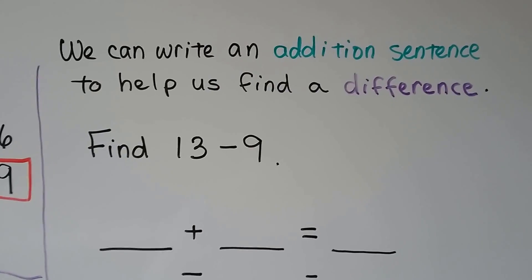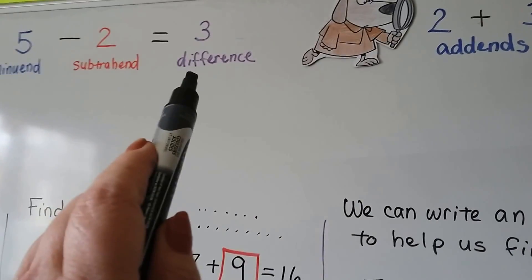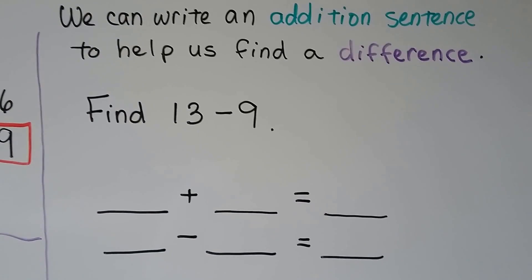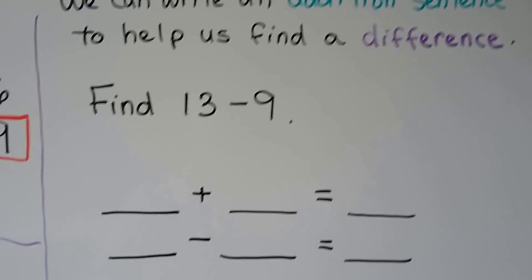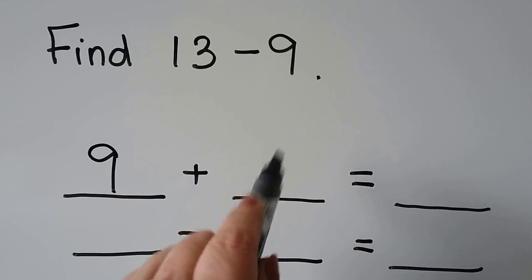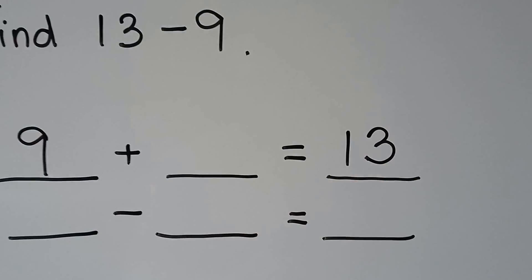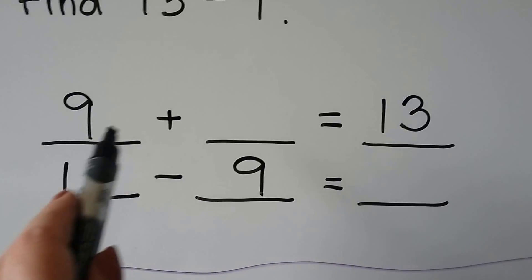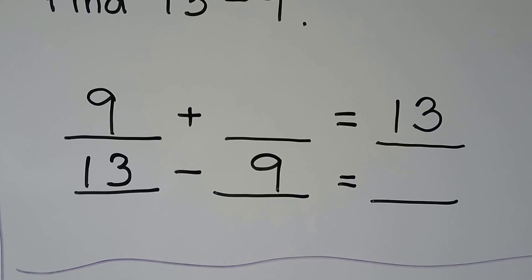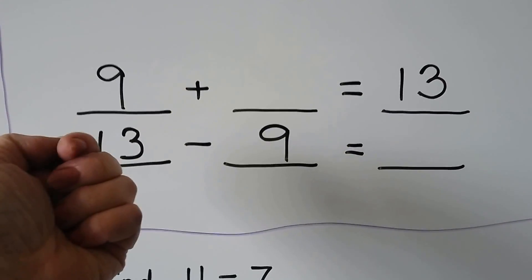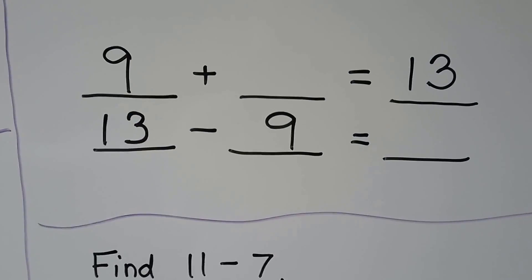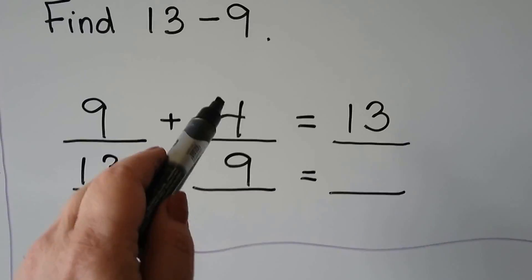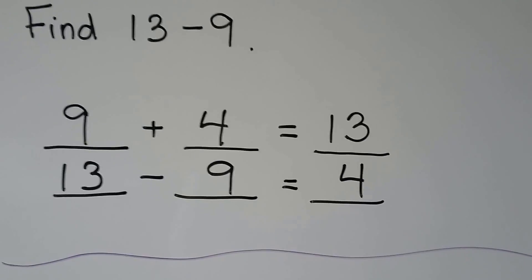We can write an addition sentence to help us find a difference. Remember, the difference is the answer in a subtraction sentence. For 13 minus 9, we can write: 9 plus an unknown number is equal to 13. We can start at 9 and count up to 13: 9, 10, 11, 12, 13 — that's 4. So the missing number is a 4, because in related facts they use the same numbers but in a different order.